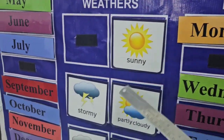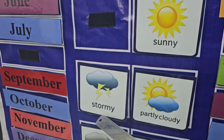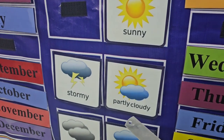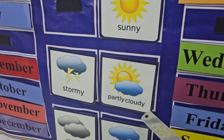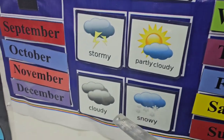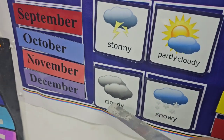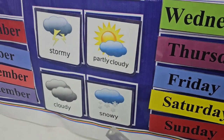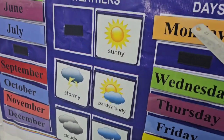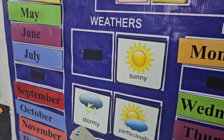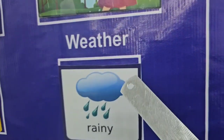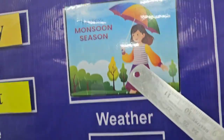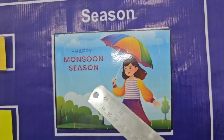How many types of weather are there? Sunny day, stormy day, partially cloudy, cloudy, and snowy. How is the weather today? Rainy day. And the season is?